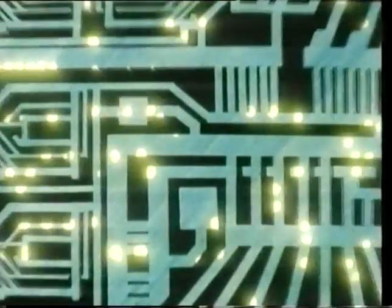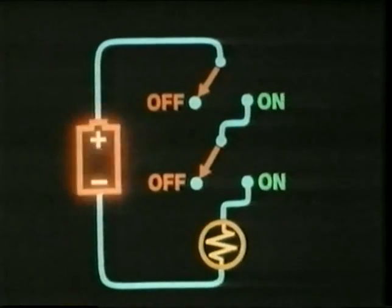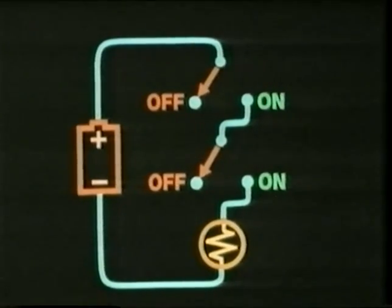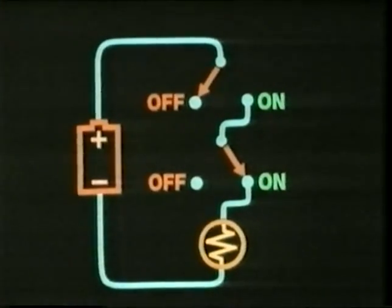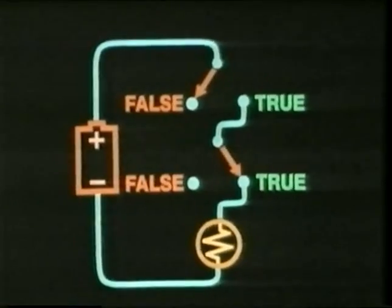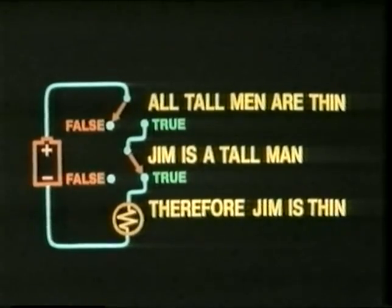If we imagine one of these circuits as being like this, with a power source, a battery, two switches, and a light bulb, then we can see that the electric current from the battery can only reach the light bulb and make it light up when both switches are on. If either switch goes off, the light goes out. Now as far as the circuit is concerned, on or off can just as easily stand for true or false. So if the first switch is statement one in our logical argument, and the second switch is statement two, and the light bulb is statement three, then only when both of the first two statements are true can the third statement also be true. But if either of the first two statements is false, then the third statement must also be false.